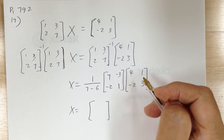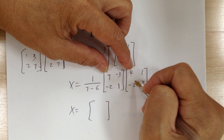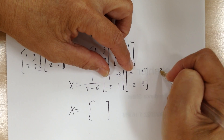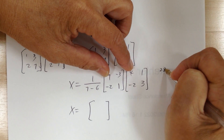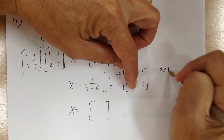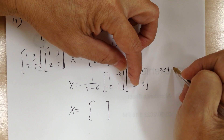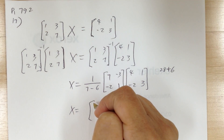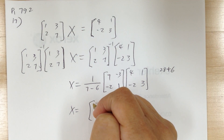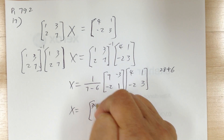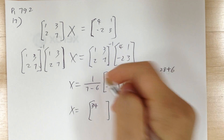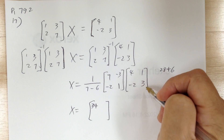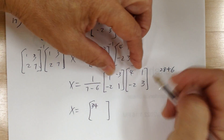Now to multiply the matrices, use the standard matrix multiplication. The first row, first column gives 28 plus 6, which is 34. Then go to first row, second column.